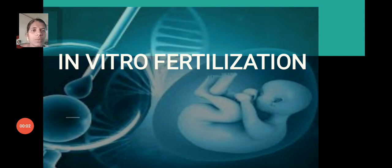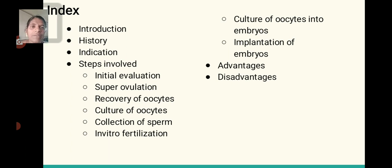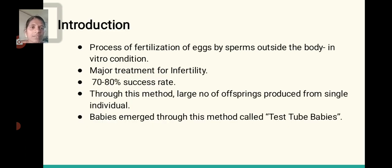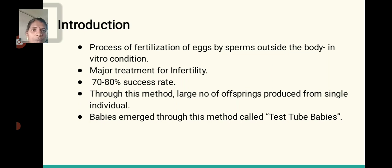Good morning to everyone. Today I talk about in vitro fertilization. In vitro fertilization means egg and sperm fused outside the body in in vitro condition. It is a major treatment for infertility. This method is used in single individuals and a large number of offspring can be produced. The babies produced by this method are called test-tube babies. It has a 70-80% successful rate.